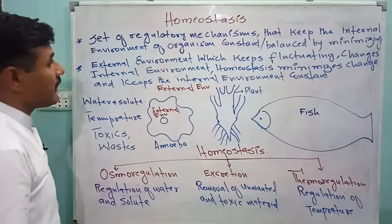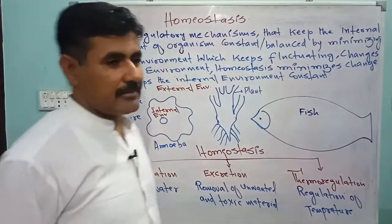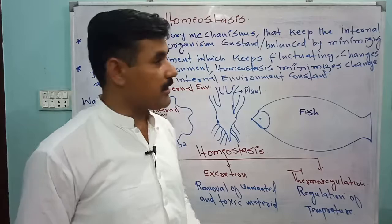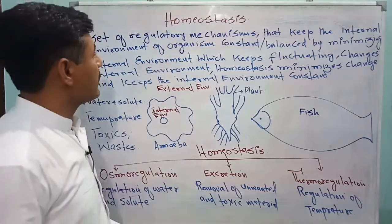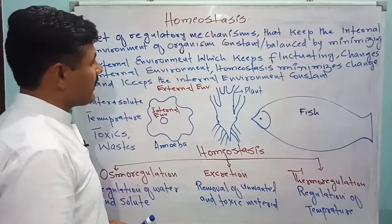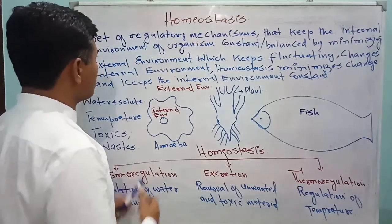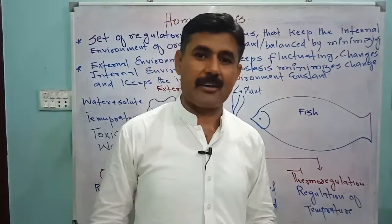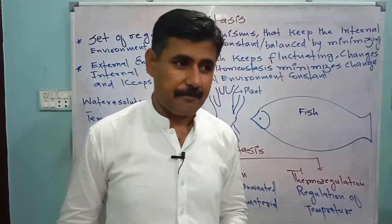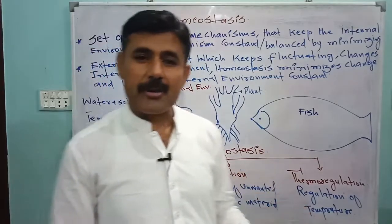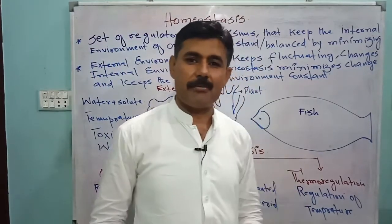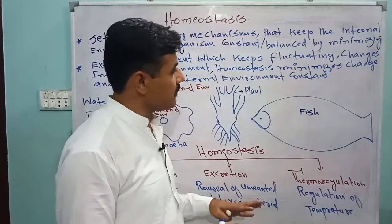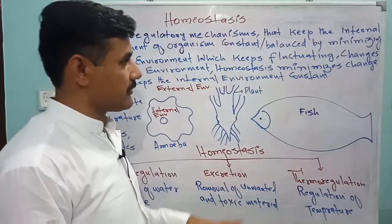Homeostasis is derived from a Greek word that means to remain the same, to remain steady, to remain constant. Homeostasis is defined as a set of regulatory mechanisms that an organism performs to keep the internal environment always constant or balanced.